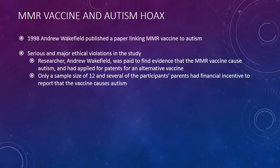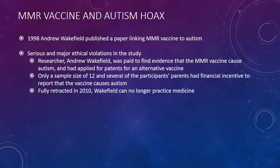The study only had a sample size of 12 people, and several of the participants' parents had financial incentive to report that the vaccine causes autism. Even with that small sample size, it's hard to believe those parents were correctly reporting what was going on. This paper was fully retracted in 2010 and Wakefield was thrown out of the medical profession. Some say this is the most dangerous medical hoax within the last hundred years, as the rise of measles, mumps, and rubella is a serious concern.